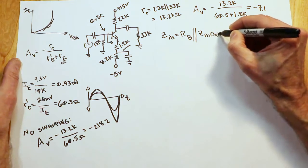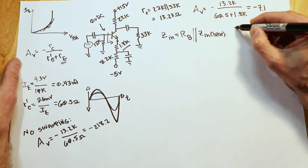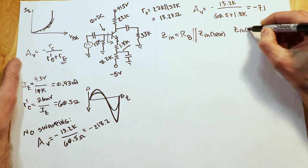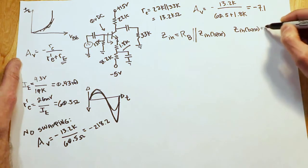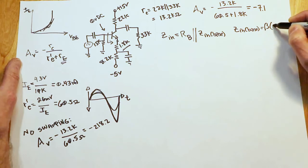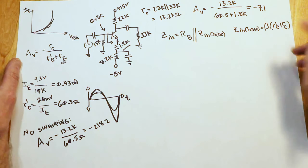is equal to the beta of the transistor times quantity R prime E plus R E. In other words, the R prime E plus the swamping resistor. So you can see what's happening in this formula.